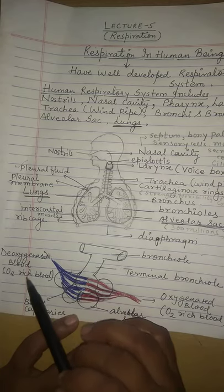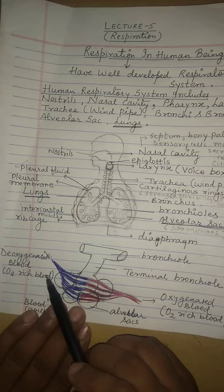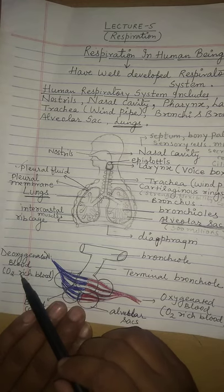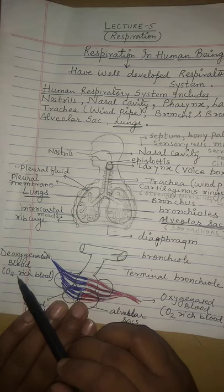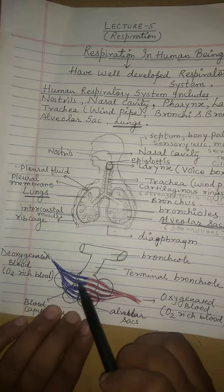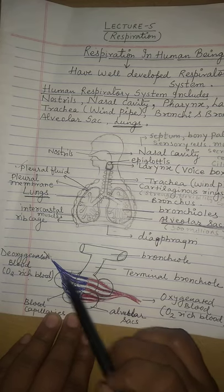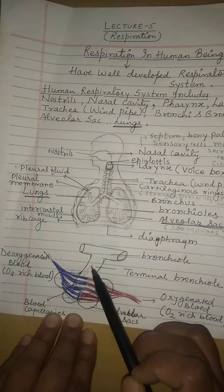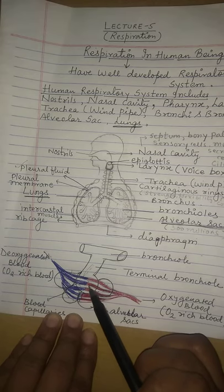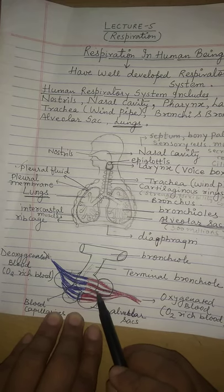During cellular respiration, CO2 is produced and enters the blood. The de-oxygenated blood, which has more CO2 and less oxygen, arrives at the alveolar sacs. Here, the CO2 moves out of the blood into the alveolar sacs, and oxygen from the air in the alveolar sacs moves into the blood. The resulting blood, now rich in oxygen and low in CO2, becomes oxygenated blood.